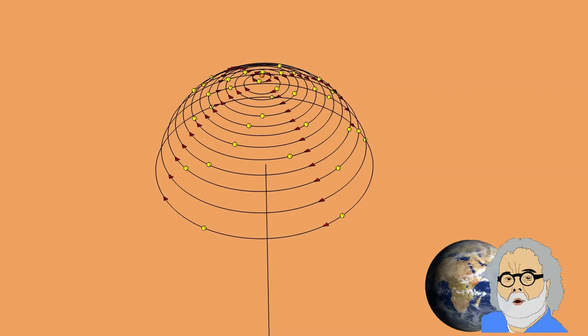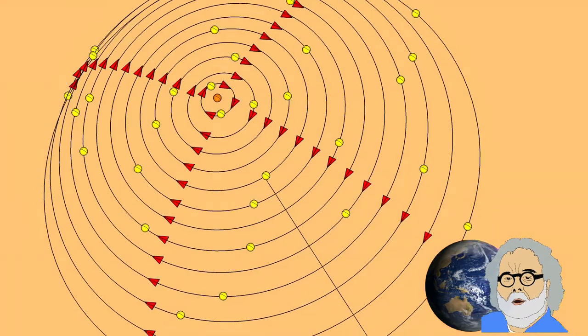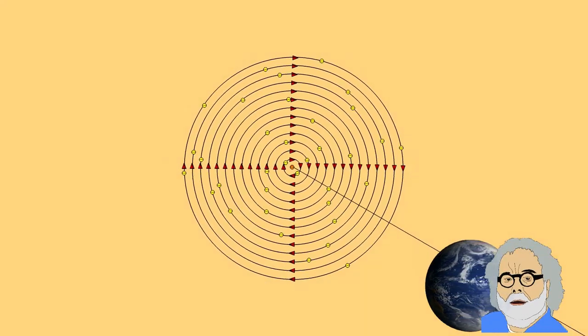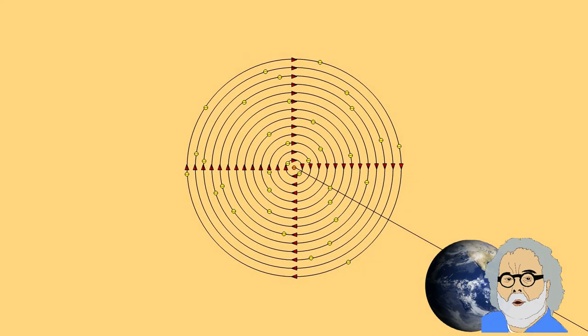When we place them in this position, again concentric around Polaris but at different heights, we see when we look at them from ground level that they form circles, just like we see in reality.